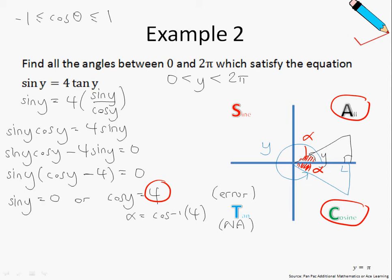Now for the first scenario, sin y = 0. Drawing the sine graph from 0 to 2π, the sine function is between 1 and negative 1. The sine function equals 0 at y = 0, y = π, and y = 2π. However, since the range of y is 0 to 2π excluding the endpoints 0 and 2π, we only take into account the point y = π.